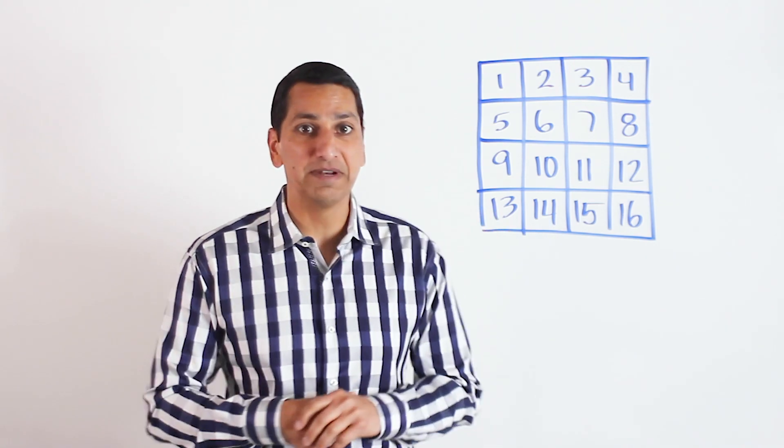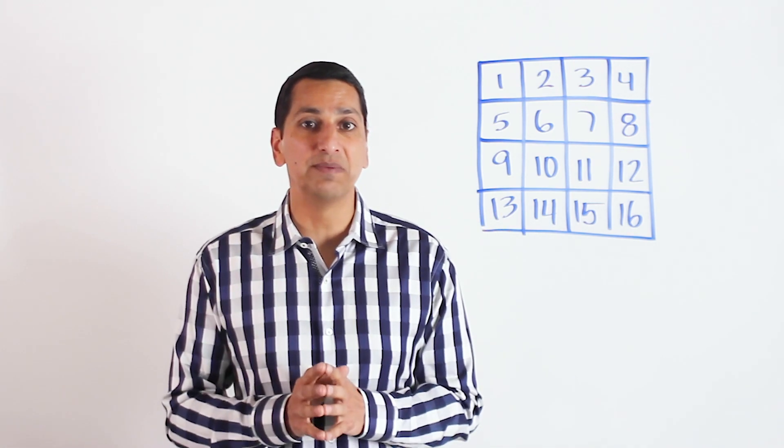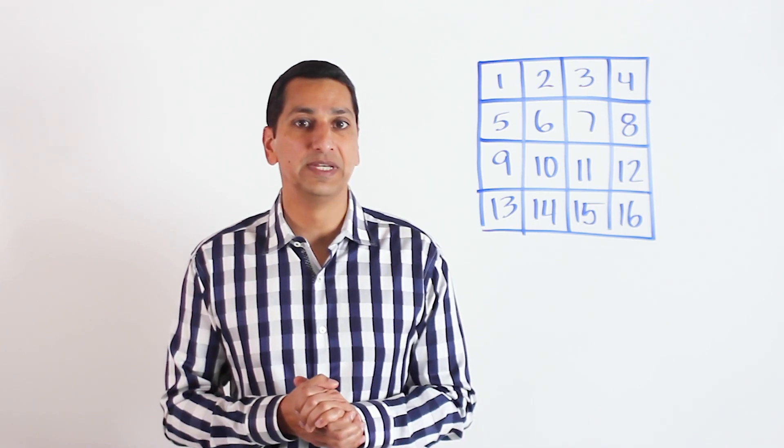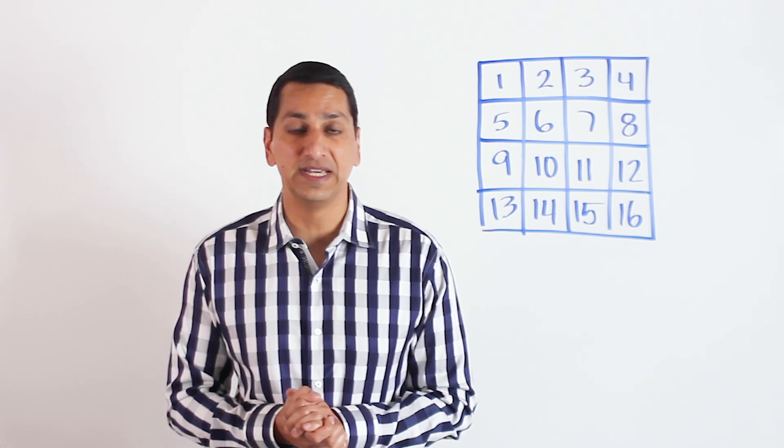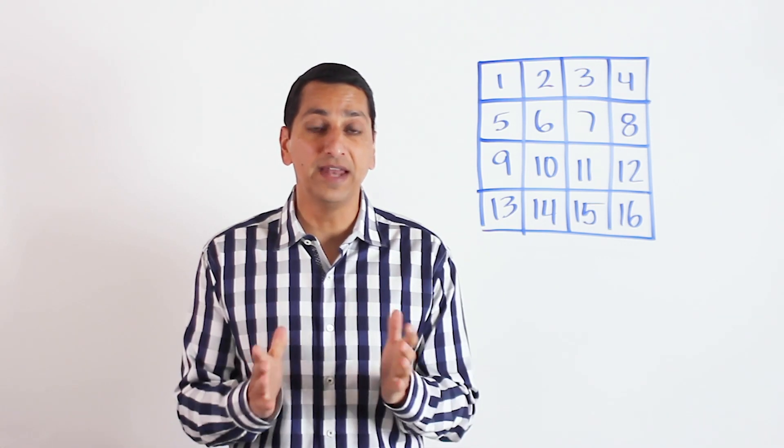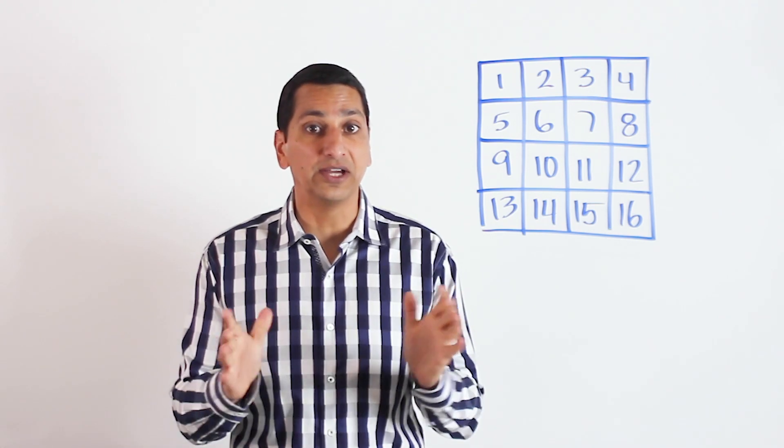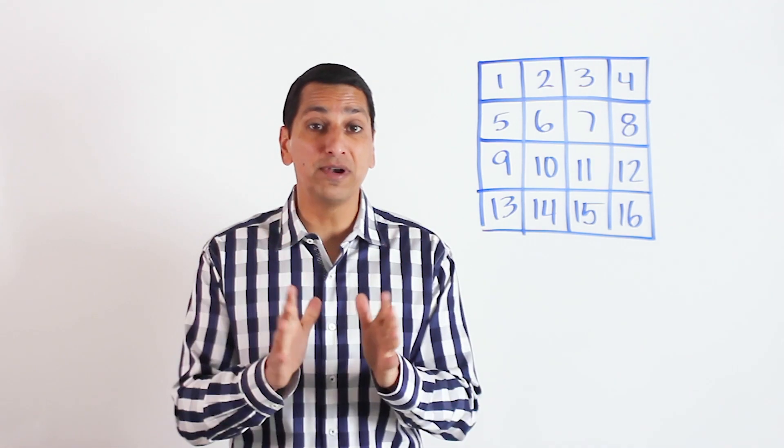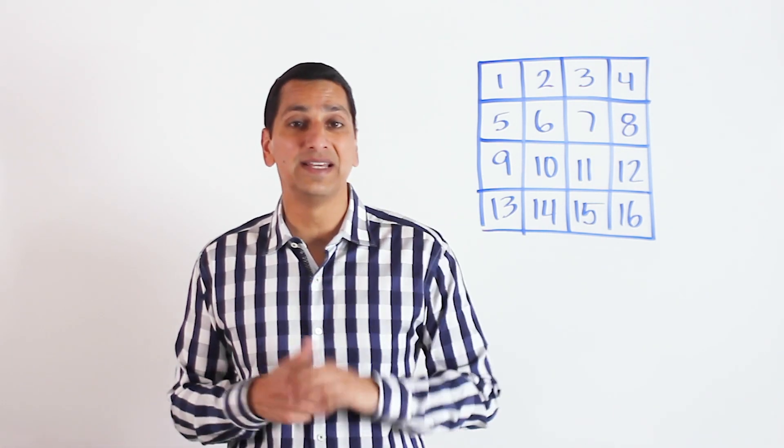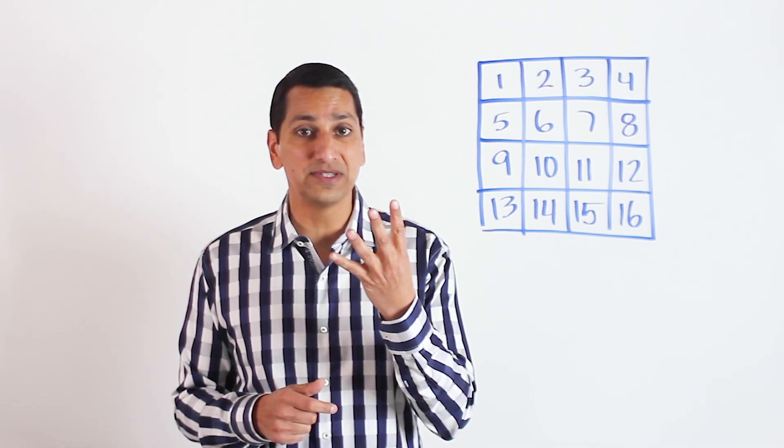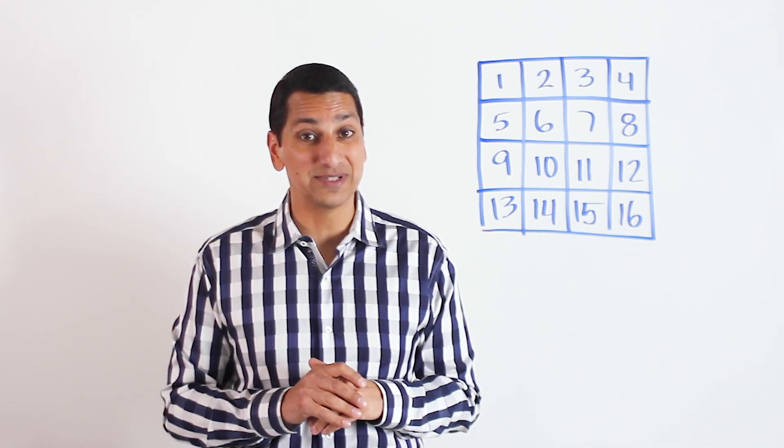So here's a magic trick I'm going to share with you how it works so you can pull it off in your own classroom. You want to make a four by four grid like this, numbered one through 16, as I have here. Then you're going to tell the students, look, I'm going to let you pick four numbers from this list, and I am going to predict the sum of those four numbers right now before you've even selected your numbers.